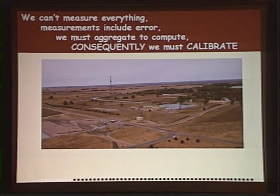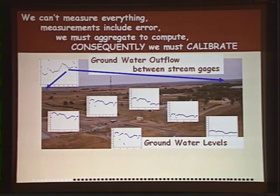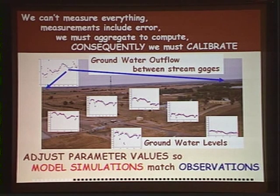Since we can't measure everything, what we do measure has error in it and we have to aggregate in order to make our computations — as a result, we have to calibrate our model. Here's a small piece of that system in Nebraska with a number of wells to match. Here are the water levels in wells as a function of time, and also stream gauges — we can take the difference between the two and get the groundwater outflow to the river over time. We work to adjust the parameter values until we can get a good match between what we observed in the field and what the model simulates.